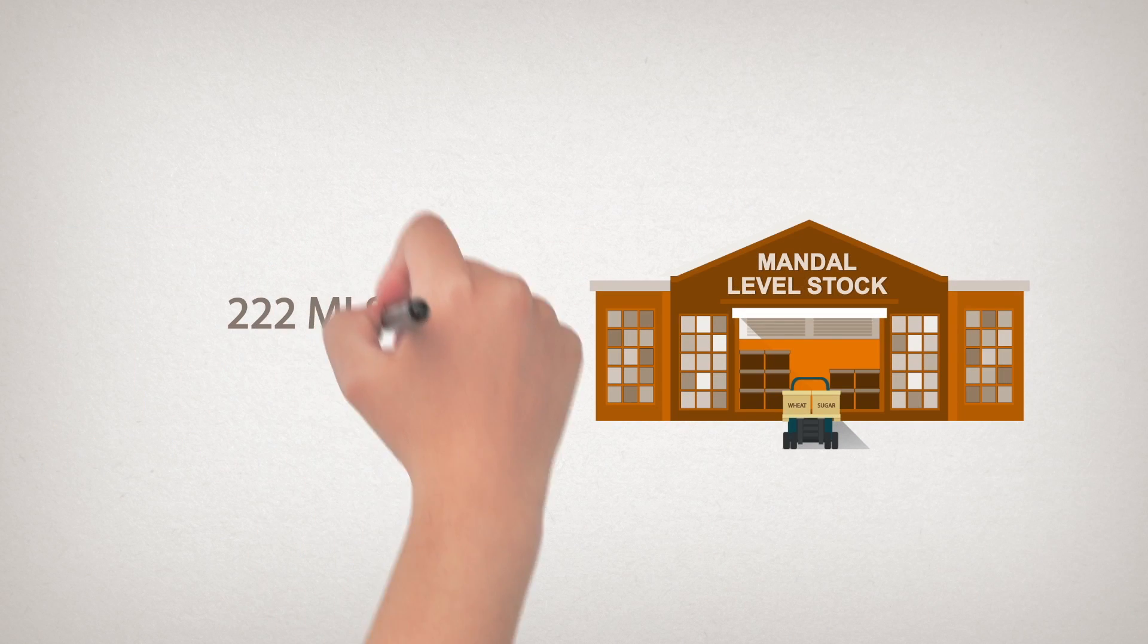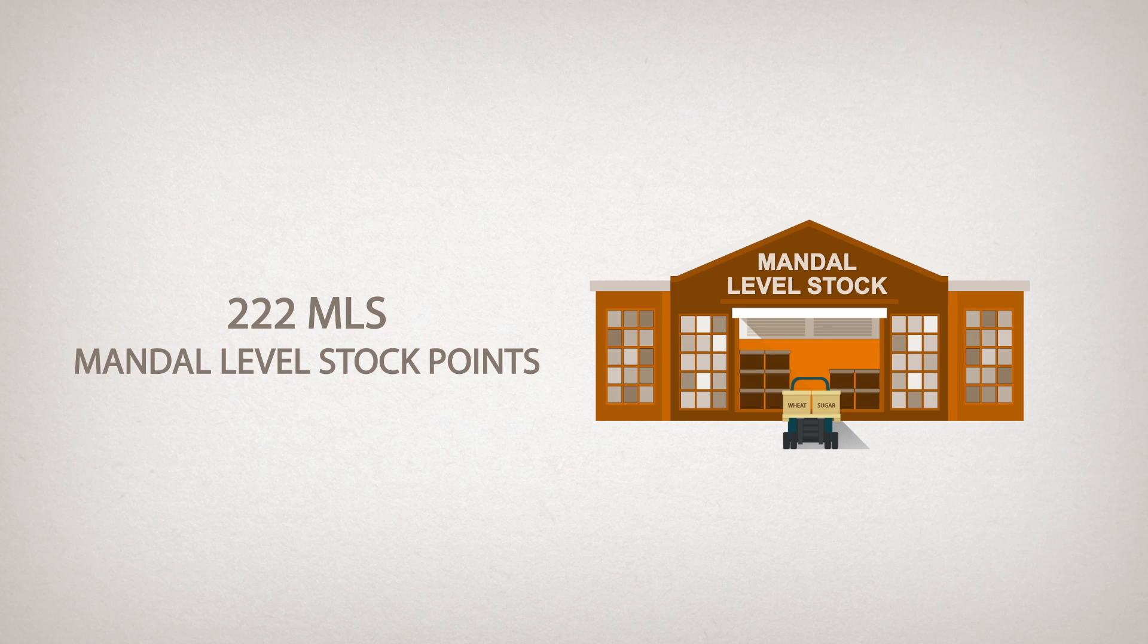Each warehouse is mapped to one of the 222 MLS or Mundell level stock points across the state, depending on proximity.